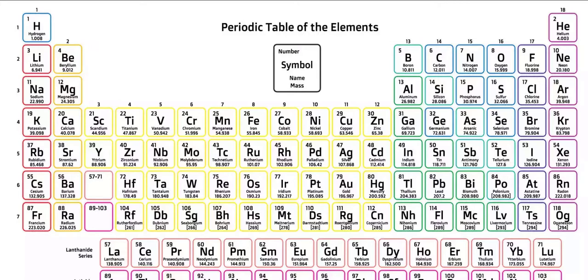As we go across the elements in the second row, we see that each one has an additional electron, so that by the time we get to neon with ten electrons, we have filled both the inner and second shells to capacity.